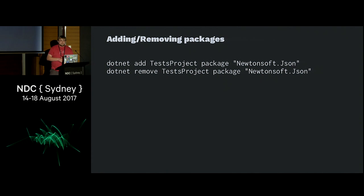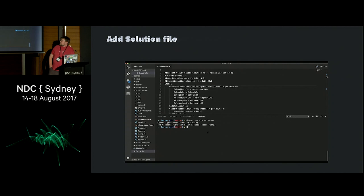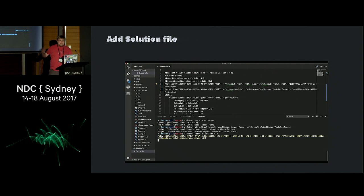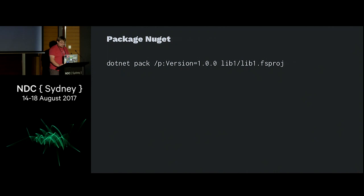Adding and removing dependencies — we don't have the GUI NuGet thing inside Visual Studio Code. You can just add a package using .NET add, specifying the project and the package you want. Removing is the same. You can also generate a solution file — just do .NET new solution and give it a name, then add all the projects you want. There's a slight bug where it generates the wrong path separator, putting backslashes instead of forward slashes, which gives a compiler error. Just make them forward slashes and everything works fine.